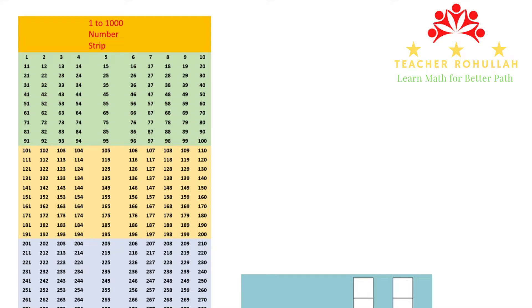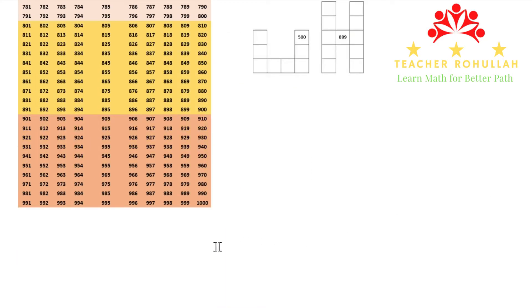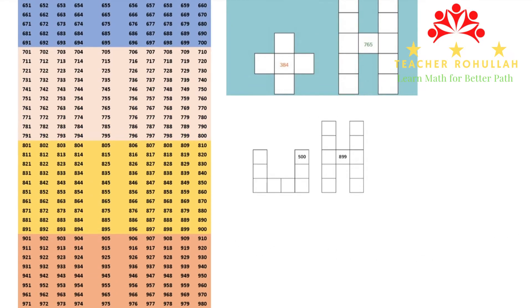The strip which is displayed here is an example of a number 1 to 1000 strip. Here we have 10 columns in which we have numbers 1 to 10, 11 to 20, 21 to 30, and so on. This is how the strip is, and this is the thousand part of it. We are going to solve a few questions which are taken from the Cambridge Primary Workbook and also the Learners Book.